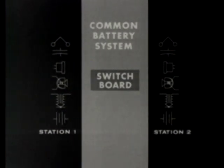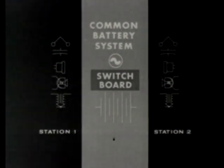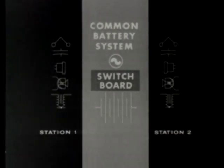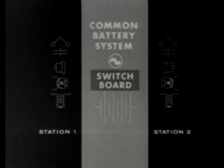The common battery system, however, must use a switchboard, providing power for both signaling and talking. Ringers, capacitors, receivers, carbon transmitters, and induction coils are again used at each station.